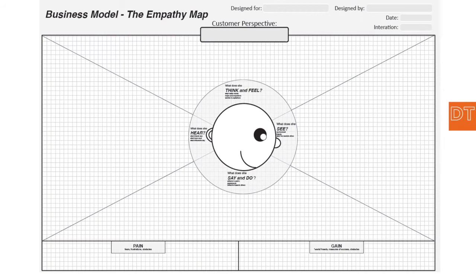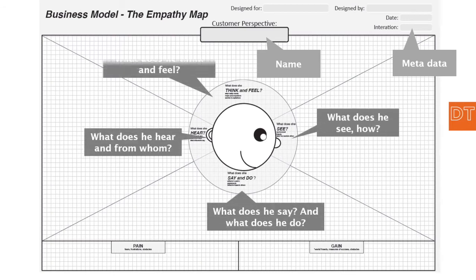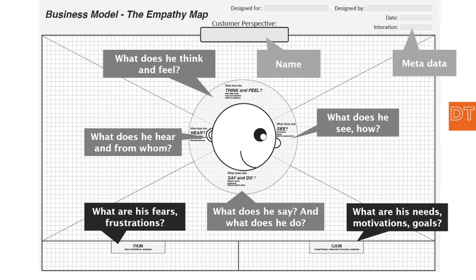When you did an interview, you fill it in afterwards. First thing is you put in the metadata: who did I interview, on what date, who was doing the interview, and things like that. Then on the basis of your interview you try to categorize what you heard and saw into these areas — the segments on the poster. What does he see? How does he see that? Who was showing it to him? What does he hear? From whom did he hear that? What does he say about it? And what kind of behavior does he do? On the basis of those things we can get a feeling about what he thinks and feels. If you've filled all these segments in, you can distill what his pains and gains are. The pains are his fears and frustrations, and the gains are his needs, motivations, and goals.